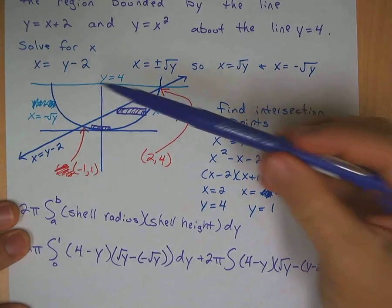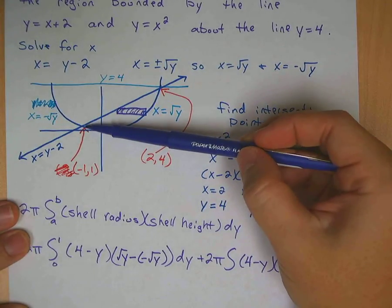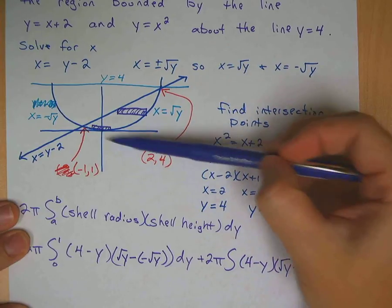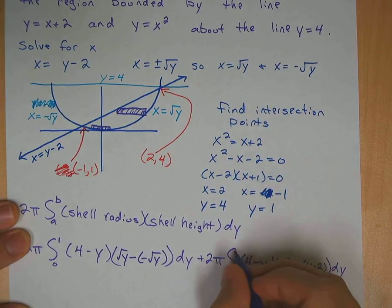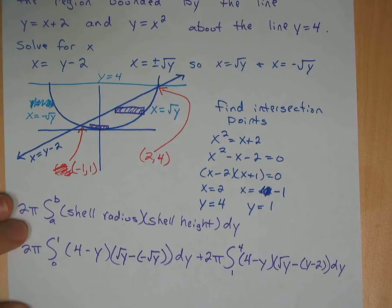What are our y limits? Well, our y limits start here at one, the y value there, and end here at 4, so it's from one to four.